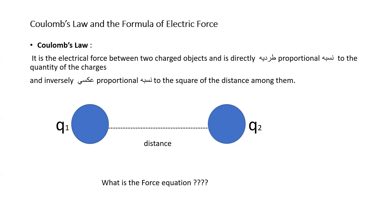When you have two charges with a distance between them, that distance is one of the most important elements in this relation. To explain this relation we will focus on Coulomb's law. We have some elements: the first are the two charges, the distance between them, and after that we'll try to explain Coulomb's law by focusing on all of them.